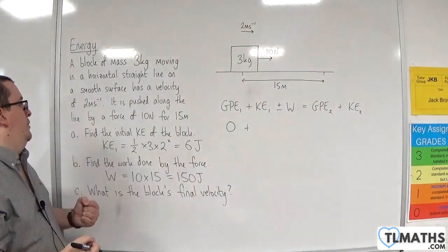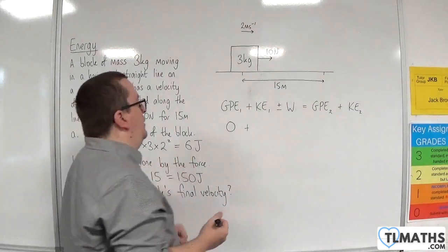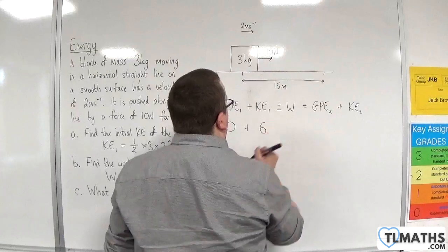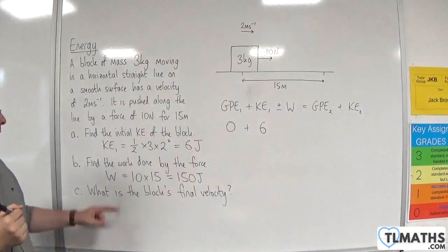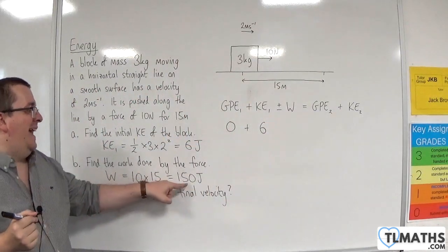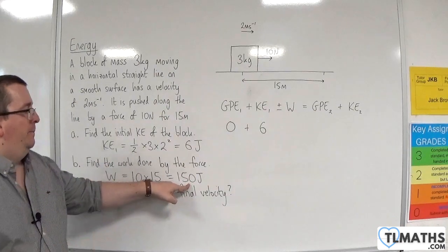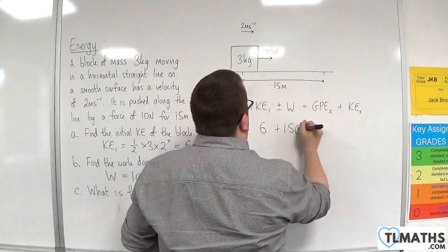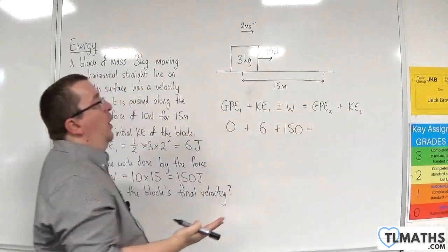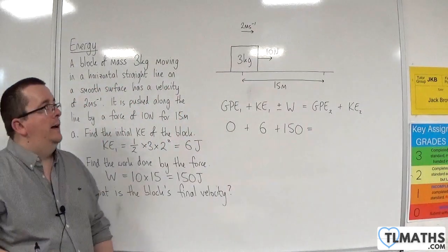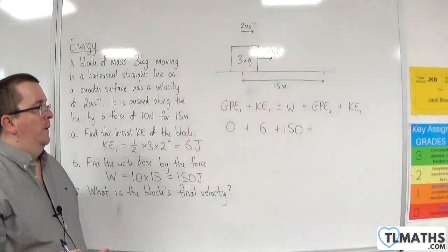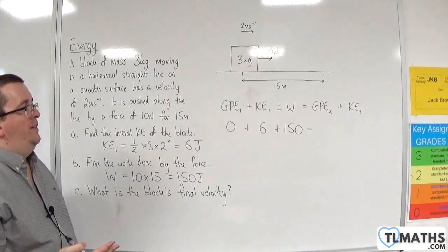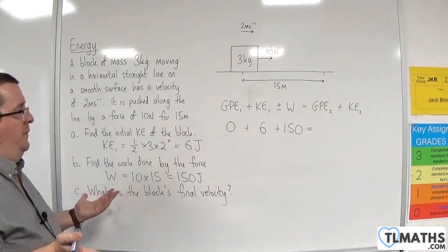The initial kinetic energy we worked out was 6 joules. And the work done by the force is adding energy into the system, so that's adding 150 joules into the system. Now that's the only force that is acting horizontally, so we don't need to take away friction because it's a smooth surface.